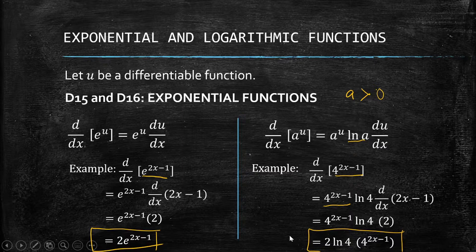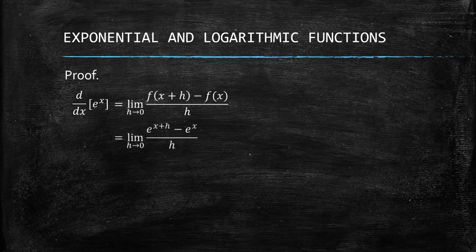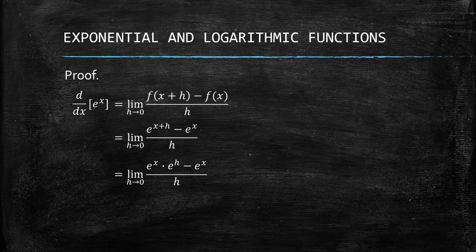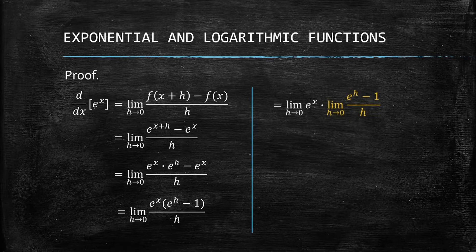Now let's prove why this is true, starting with e^x. Using the limit definition, we have f(x+h) = e^(x+h) and f(x) = e^x. Since x+h is an exponent, we apply laws of exponents: e^(x+h) = e^x times e^h. We then factor out the common factor e^x, leaving e^h minus 1 over h.